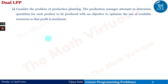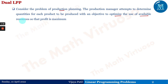We will now consider a small problem. Consider a problem of production planning. If you consider the problem of production planning, the production manager attempts to determine quantities for each product to be produced with an objective to optimize the use of available resources so that profit is maximum.